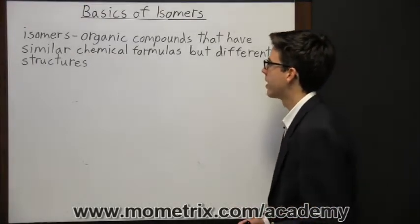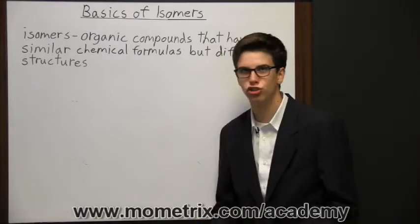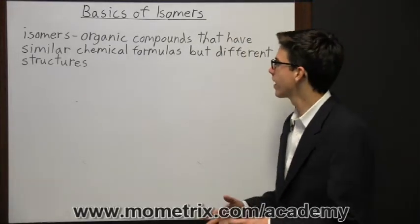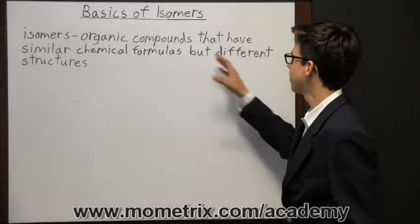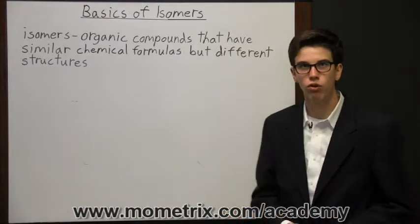Isomers are organic compounds that have similar chemical formulas but different structures. They're the same chemical formulas, it's just a different structure of the atoms that are in that chemical formula.